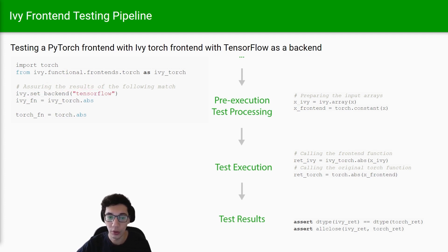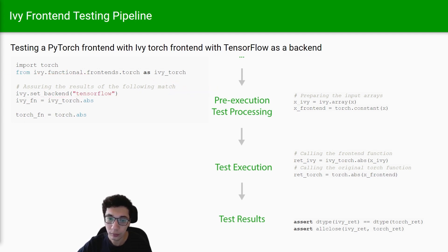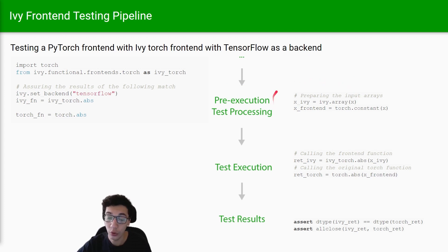The testing pipeline ensures that our frontend behaves in the same way as the original framework, regardless of the backend we are using. This pipeline consists of four primary steps. First, we generate the test data as previously discussed in our testing deep dive session. Then we begin pre-processing the generated data. In the case of frontend testing, this includes converting the generated data to the Ivy array and also to the original framework array.